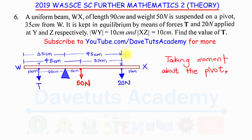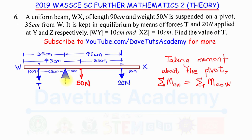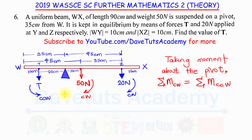Those are the parameters needed to evaluate this question. Taking moments about the pivot, the sum of the clockwise moments equals the sum of the counterclockwise moments. Force T tends counterclockwise, while the 50 N weight and the 20 N force both create clockwise moments.